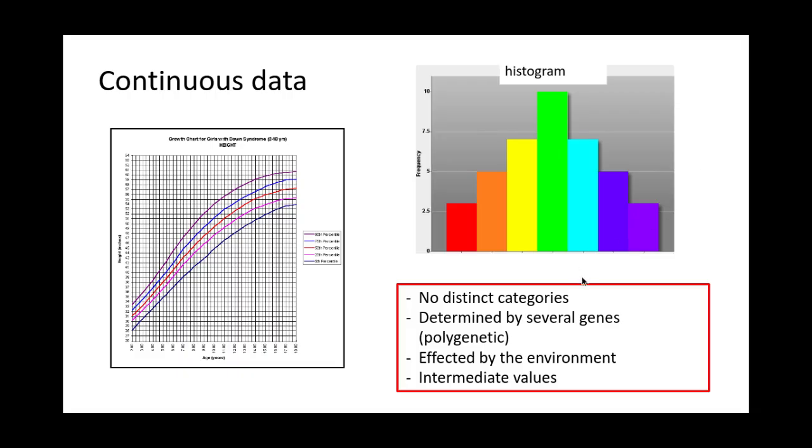Continuous data has no distinct categories. For example, it can't be blue or black - it's either 20.5 or 20.6. It's determined by several genes (polygenic), can be impacted by the environment, and there are intermediate values. For example, the length of your nose could be 2.5 centimeters or 2.6 centimeters - there are intermediate values.